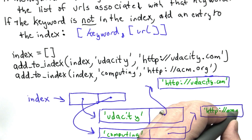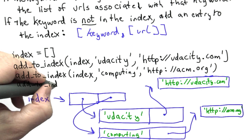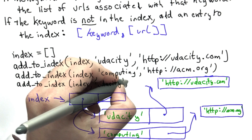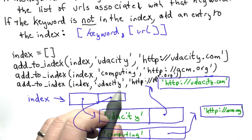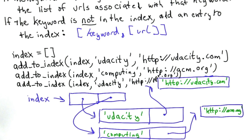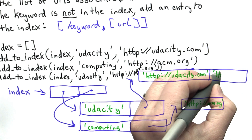Now I'll show one more example where we pass in a keyword that is already in the index. We're calling addToIndex again with the keyword 'udacity', which is already in the index, and passing in a new URL. This time we're going to mutate index, but instead of creating a new element, we mutate the element we already have. Since 'udacity' is already in the index, we don't add a new entry — we add the new URL to the list of URLs associated with that keyword.